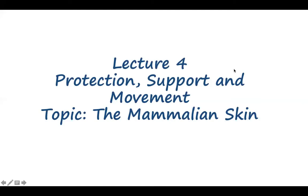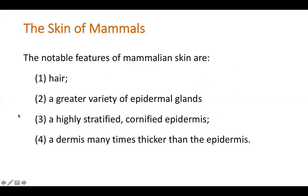Lecture four is about the mammalian skin, from the chapter on protection, support and movement. We will see the specific features of the mammalian skin and discuss them in detail along with their functions. The notable features are a greater variety of epidermal glands, a highly stratified and keratinized epidermis.